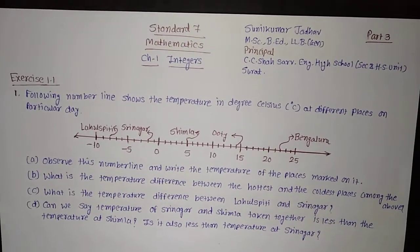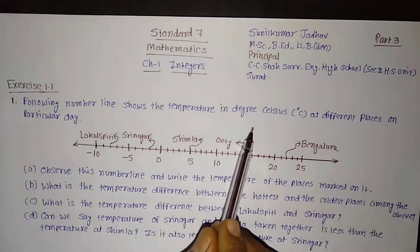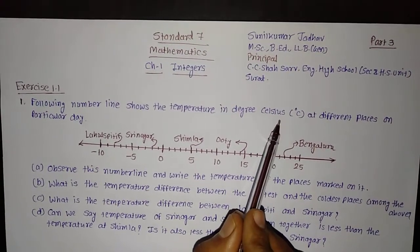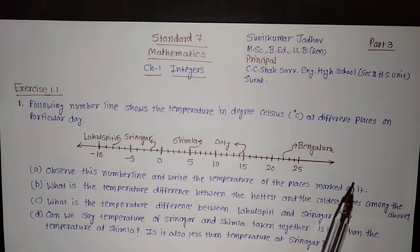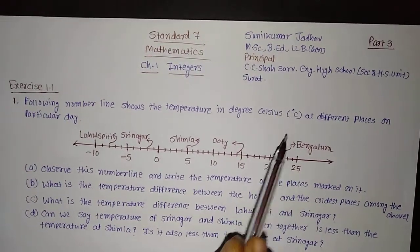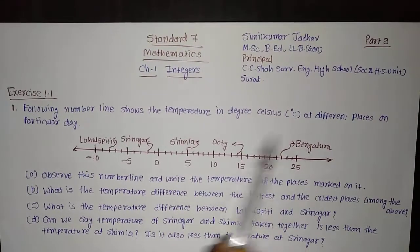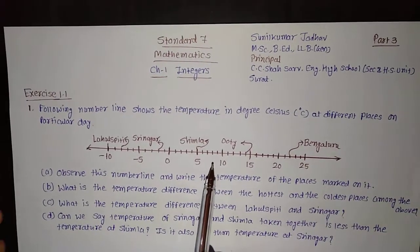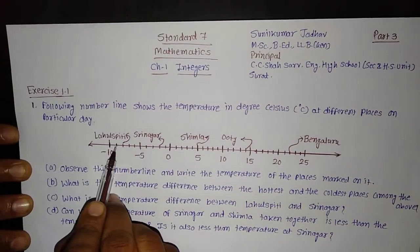First of all, let us read the question. Following number line shows the temperature in degree Celsius. You know, temperature can be measured in different units — that is in Celsius, in Fahrenheit, in Kelvin. Kelvin is the SI unit of temperature, but here the temperature is given in degree Celsius. Following number line shows the temperature in degree Celsius at different places on a particular day. We will see the number line on which the temperature is mentioned for different places on the same day.